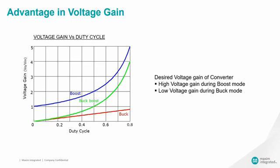Voltage gain vs duty cycle curve is shown for a buck, boost, and conventional buck-boost converter. From the graph, we can see that for the same duty cycle, boost converter has the desired higher gain compared to a conventional buck-boost converter. Similarly, for the same duty cycle, buck converter has the desired lower gain compared to a conventional buck-boost converter.